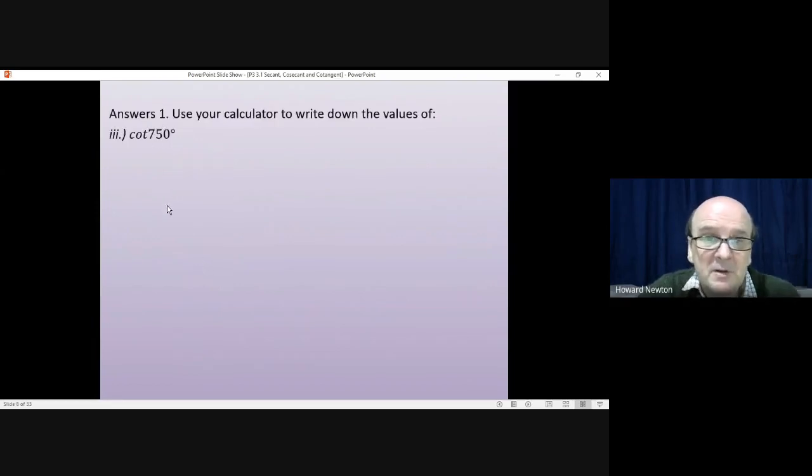Cotangent is quite a big angle now. There is no limit to how big an angle can be. There's no limit to how small it can be. So it can go plus as far as infinity. It can go minus as far as infinity.